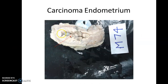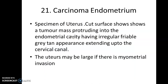Another specimen here of the uterus showing an ulceroproliferative growth — a gray-white lesion in the endometrium along the endometrium. This is carcinoma of the endometrium. Cut surface shows a tumour mass protruding into the endometrial cavity, having an irregular friable gray-tan appearance extending up to the cervical canal.